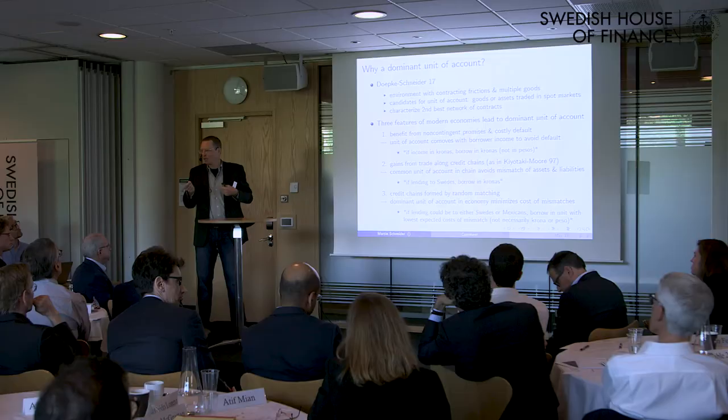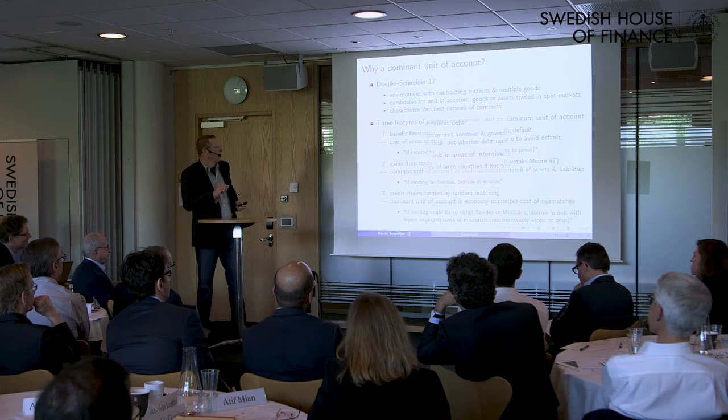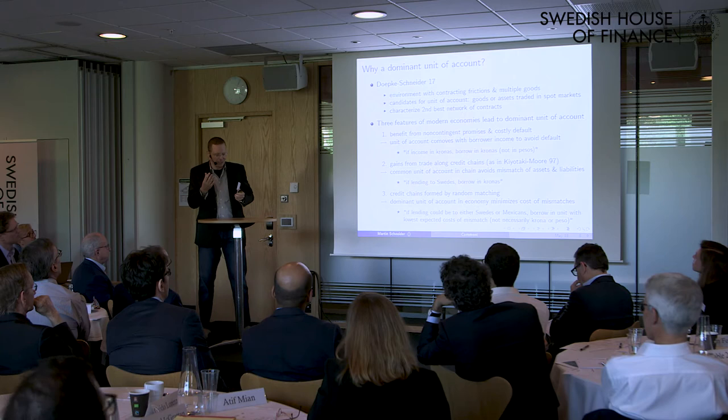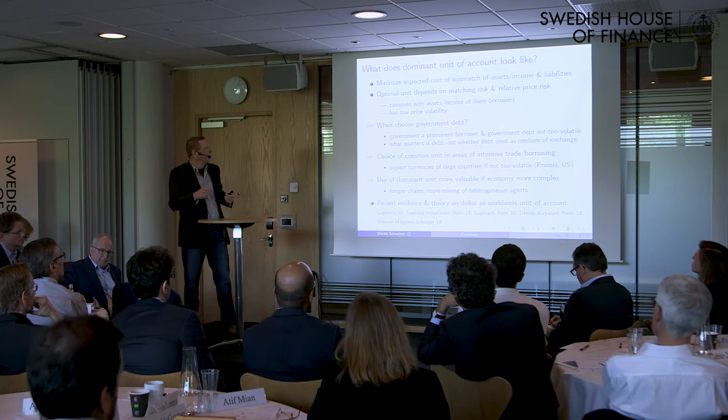The third element is that credit chains are formed by random matching, which generates a dominant unit of account in the economy that minimizes the cost of mismatches everywhere. If lending could be to either Swedes or Mexicans, you borrow in the unit of account with the lowest expected cost of mismatch — not necessarily the kronor or the peso itself. So the dominant unit of account is chosen to minimize the expected cost of mismatch of assets, income, and liabilities in credit chains. This depends on both matching risk and relative price risk. The basic principles are that it should co-move with the assets and income of likely important borrowers, and it should be relatively stable in value.